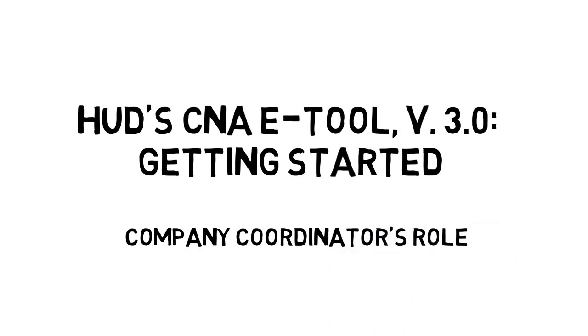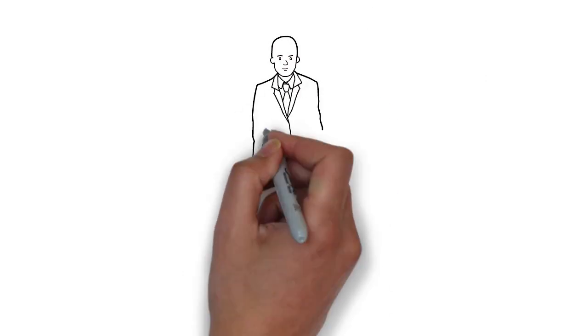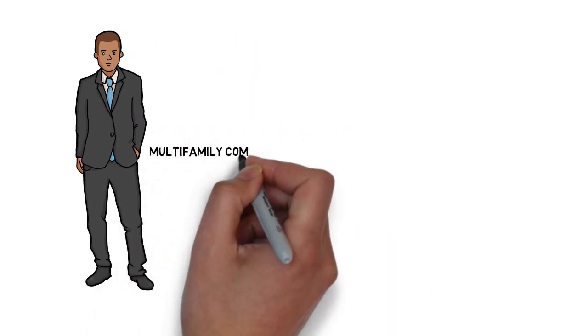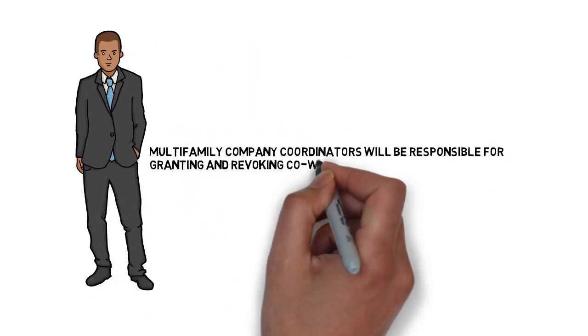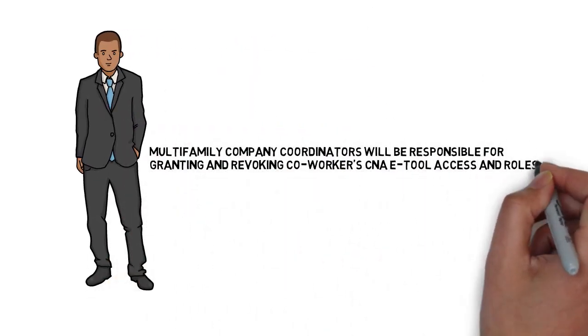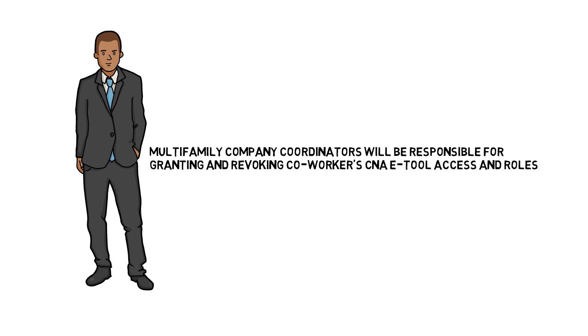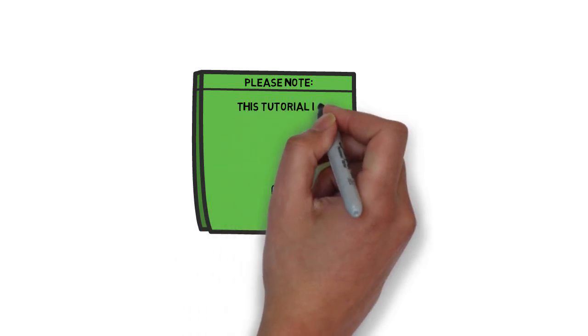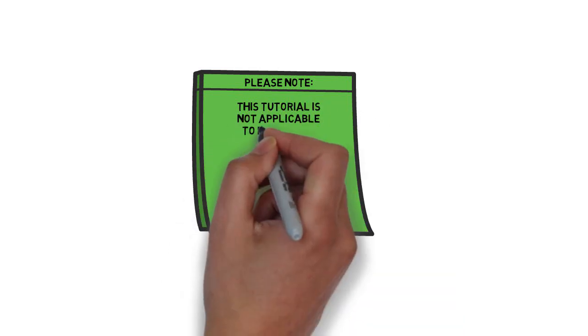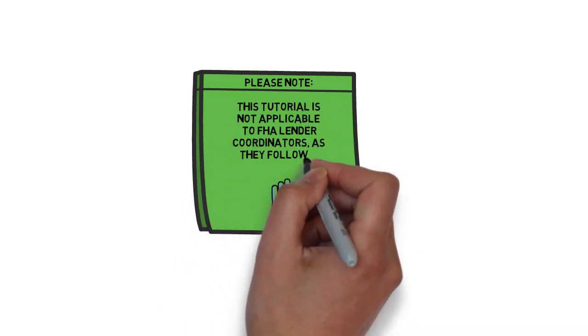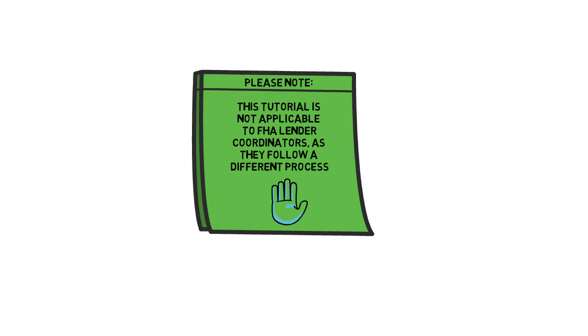This video outlines the company coordinator's role to set up and assign users access to the CNA eTool. Multi-family company coordinators will be responsible for granting and revoking co-workers' CNA eTool access and roles. Please note, this tutorial is not applicable to FHA lender coordinators as they follow a different process.